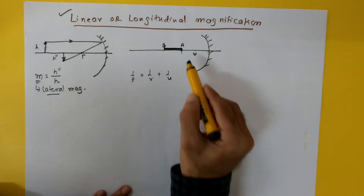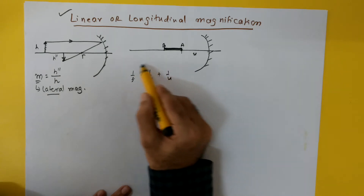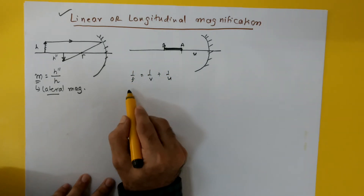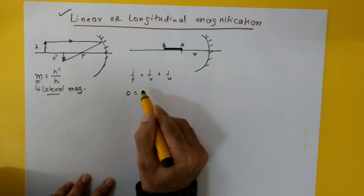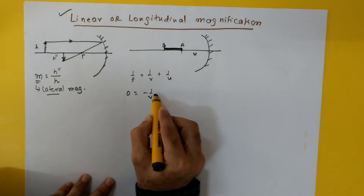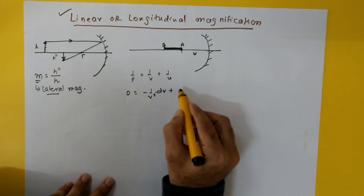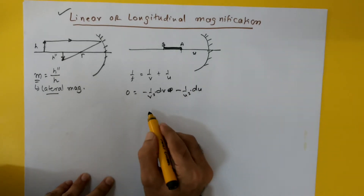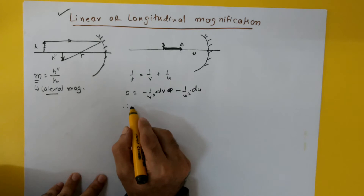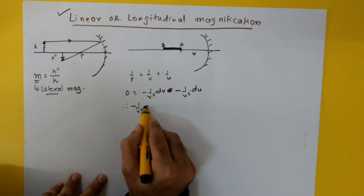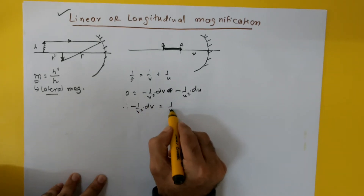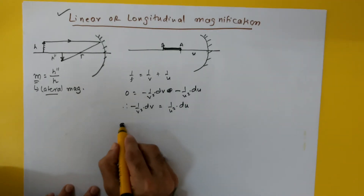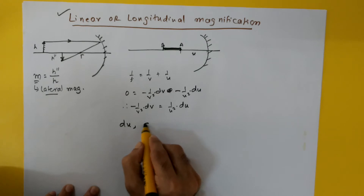So what we do in this case is differentiate the mirror formula equation. Differentiating 1/f = 1/v + 1/u gives us: 0 = −(1/v²)dv − (1/u²)du. Therefore we can write: −(1/v²)dv = (1/u²)du.